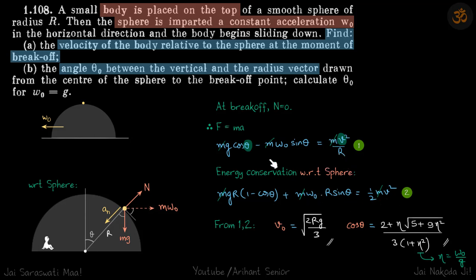Now we have two equations and two variables, theta and v. Solving that we'll get our answer. The v naught at break-off velocity is this, and cos theta is this, our answers.